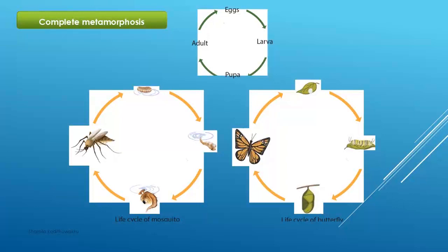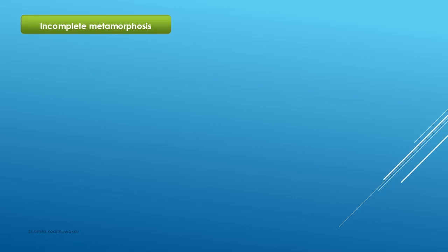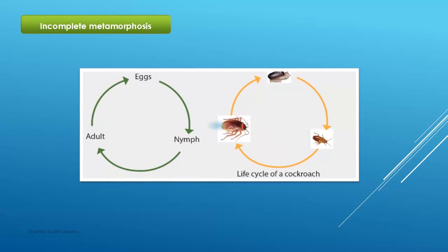In complete metamorphosis, there are four stages: eggs, larva, pupa, and adults. Eggs become larva, larva becomes pupa, pupa becomes adults. For incomplete metamorphosis, the example is the life cycle of cockroach. In this metamorphosis, there are three stages: eggs, nymphs, and adults. Eggs become nymphs, and nymphs become adults.